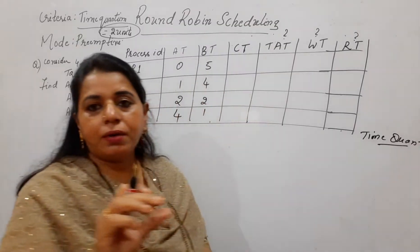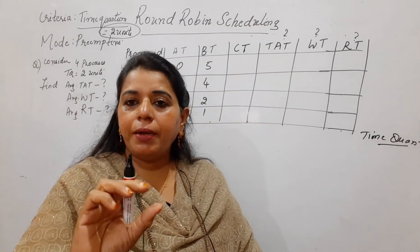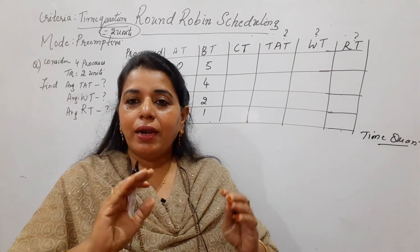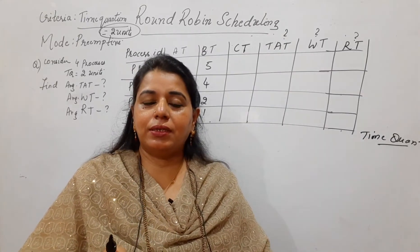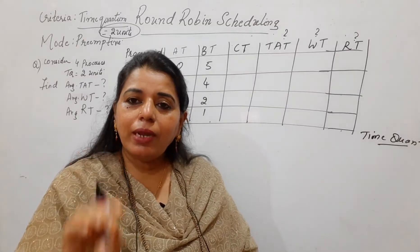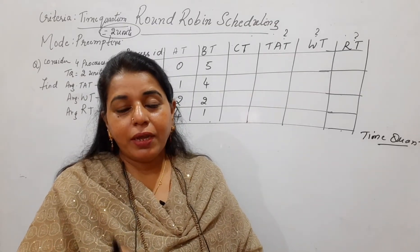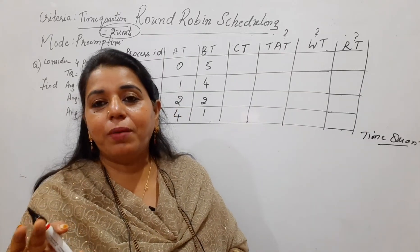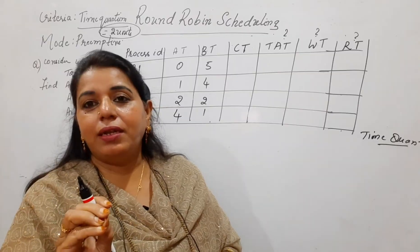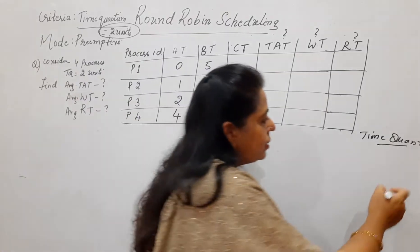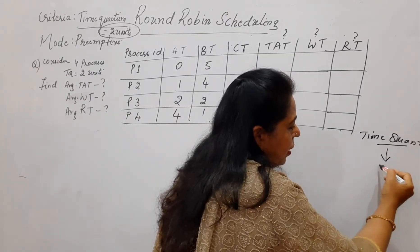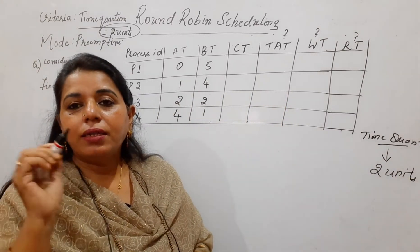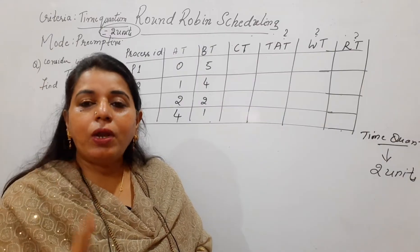Time quantum is the number of units assigned by the system to a process to get scheduled. The logic here is: let all the processes get scheduled for an equal amount of time after they arrive into the ready queue. Whatever equal time is assigned for that particular situation is called the time quantum. So if the numerical mentions time quantum equals two units, then you have to schedule a process only for two units.